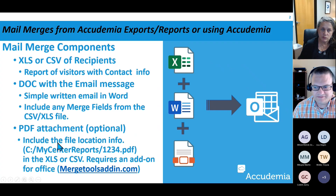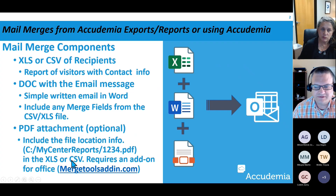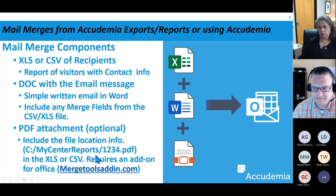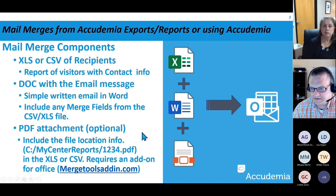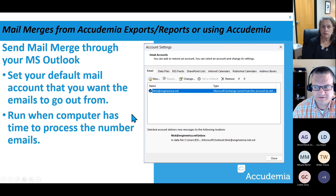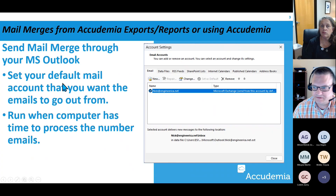If you want to add an extra layer of challenge, it would be to put a PDF attachment — and I did put 'optional' in there because it does require extra tools. It also requires that you link to it in the Excel file you create. Once you get that going and everything's set up, we'll see how you would send that out through Outlook.